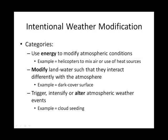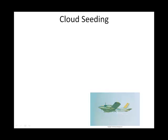Another way is we can trigger or intensify an atmospheric event like precipitation — precipitation that maybe wasn't going to occur and then we trigger it to happen. An example we're going to look at is basically seeding clouds with cloud condensation nuclei, CCNs.